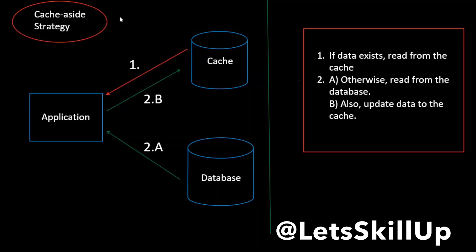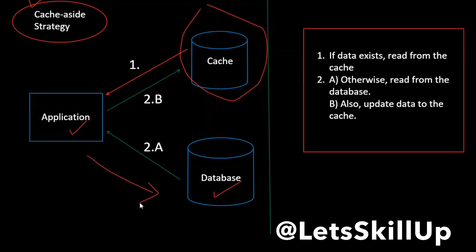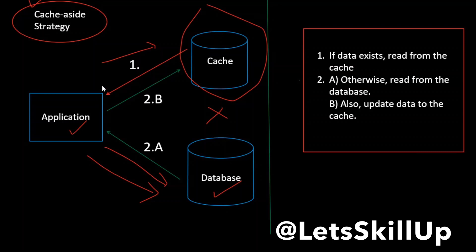The first cache strategy is the cache-aside strategy. Cache-aside is a caching architecture that positions the cache outside of the regular path between application and database. Generally any data being written will directly go to the database. The application is responsible for reading and writing from storage, and the cache does not interact directly with the database. The application looks up an entry in the cache — if data exists it reads the data, otherwise it results in a cache miss. If data does not exist it loads the data from the database and then stores that entry in the cache as well so that access is faster next time. Memcache is generally used in this manner, and it is also referred to as lazy loading because we are only loading data to the cache when it is required.